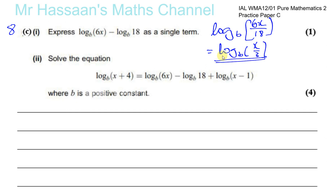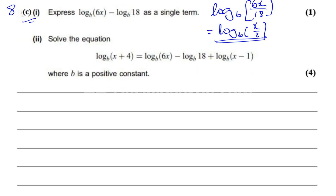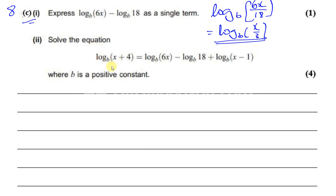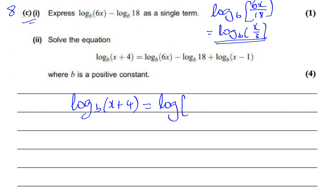That's the answer for the first part. Now part two says solve the equation: log to the base b of (x + 4) equals log to the base b of 6x minus log to the base b of 18 plus log to the base b of (x - 1). Those two terms are the same as what we just found, so we have log to the base b of (x + 4) equals log to the base b of (x over 3).